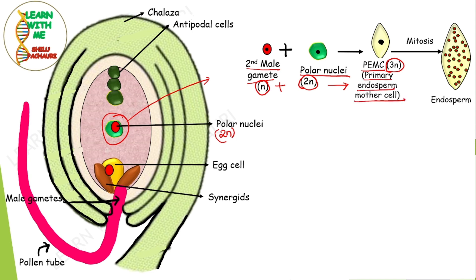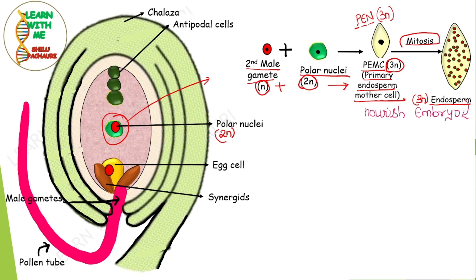So a haploid and diploid fuse, resulting in the formation of a triploid structure called PEMC — that is, the Primary Endosperm Mother Cell — also known as PEN, the Primary Endosperm Nucleus. PEN will be triploid. This PEN will then divide mitotically to give rise to a mass of nutritive cells called endosperm, and the endosperm is triploid.